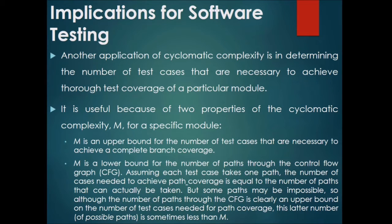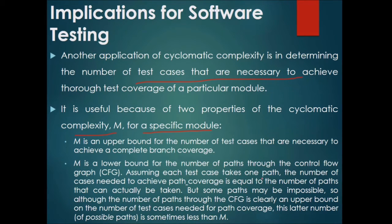Another application of cyclomatic complexity is in determining the number of test cases necessary to achieve thorough test coverage of a module. Two key properties hold: cyclomatic complexity M is an upper bound for the number of test cases needed to achieve complete branch coverage, and M is a lower bound for the number of paths through the control flow graph. Assuming each test case takes one path, the number of cases needed for path coverage equals the number of paths that can actually be taken.